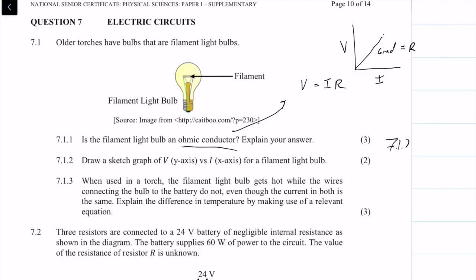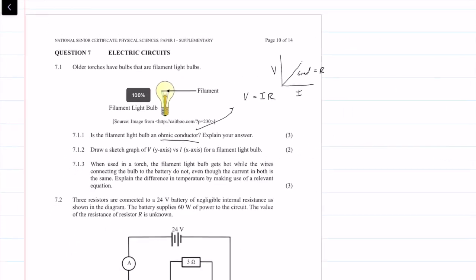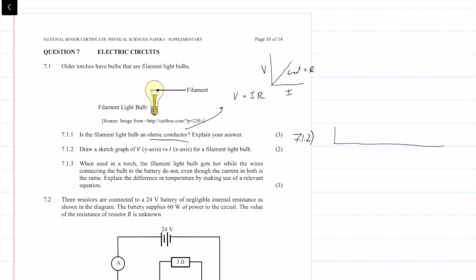Question 7.1.2 draws on from the previous question and says draw a sketch of voltage versus current. For an ohmic resistor, we have a constant gradient. For a non-ohmic resistor, we have a changing gradient. As the current increases, the temperature increases, which causes the resistance to increase.